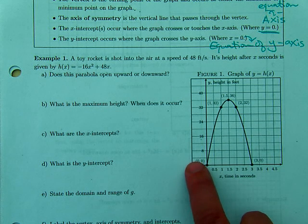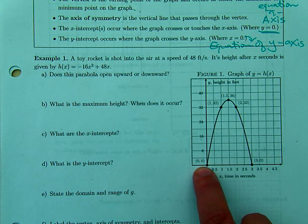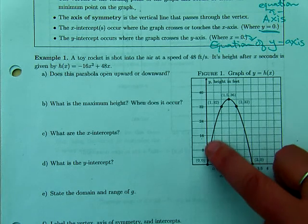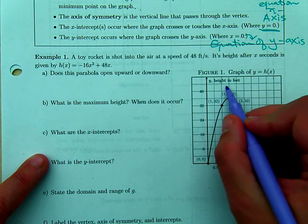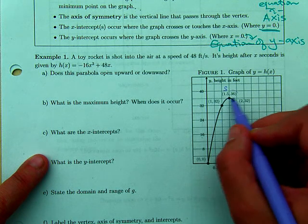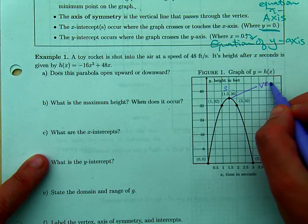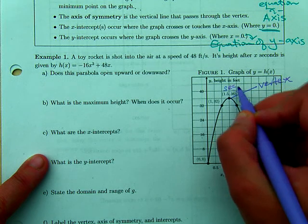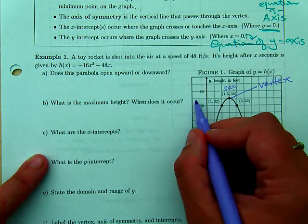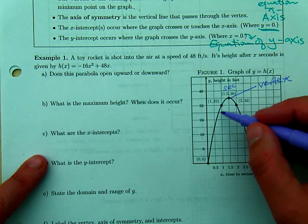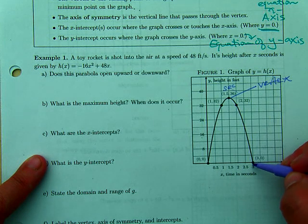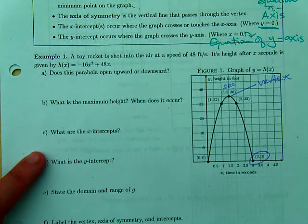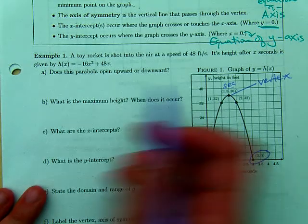Here they're saying here's the seconds after it's shot, and here's the height above the ground. It's shot into the air. It started out on the ground at zero seconds, zero feet above the ground. It climbs up. After 1.5 seconds it reaches a maximum height of 36. Then it turns around, gravity forces it to come back down to the ground. How long did it take? Three seconds.